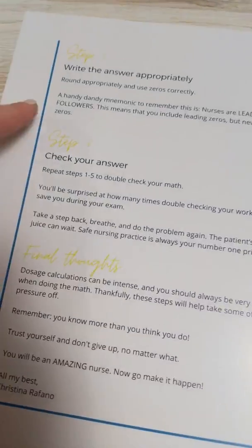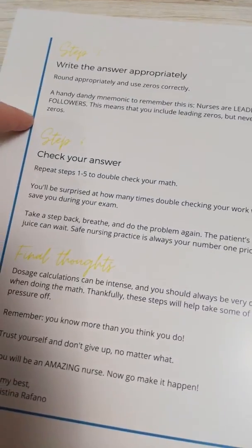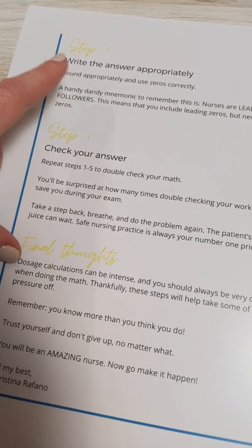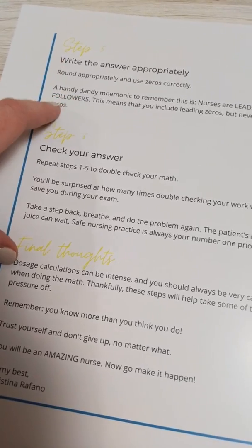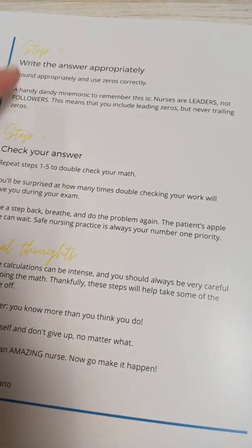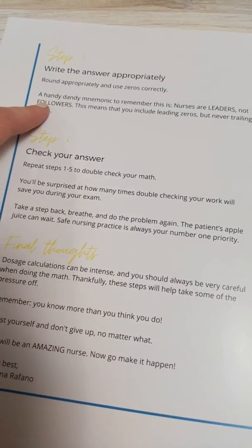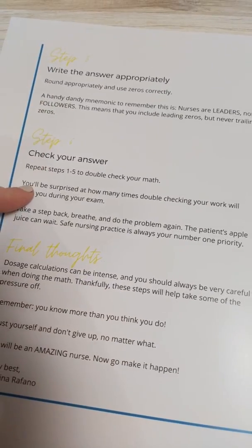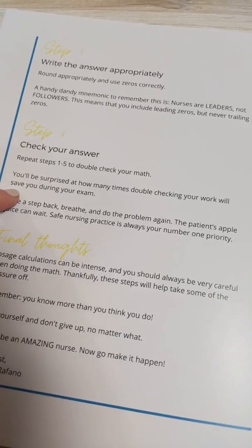Then the last two steps — step five and six — are to write the answer appropriately. Follow the correct rounding rules, then check your answer by doing the process.